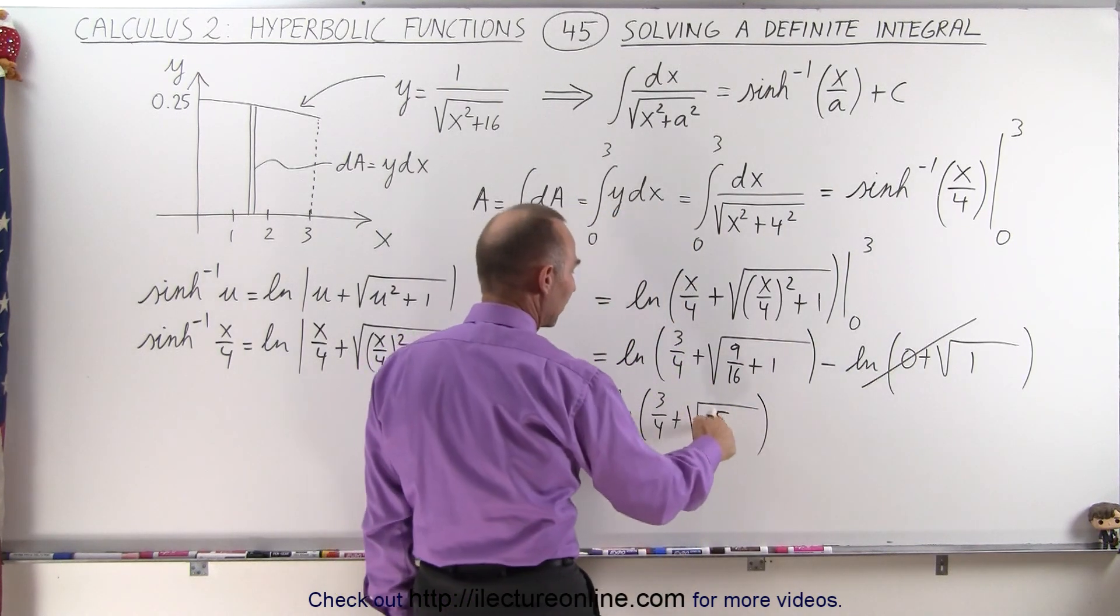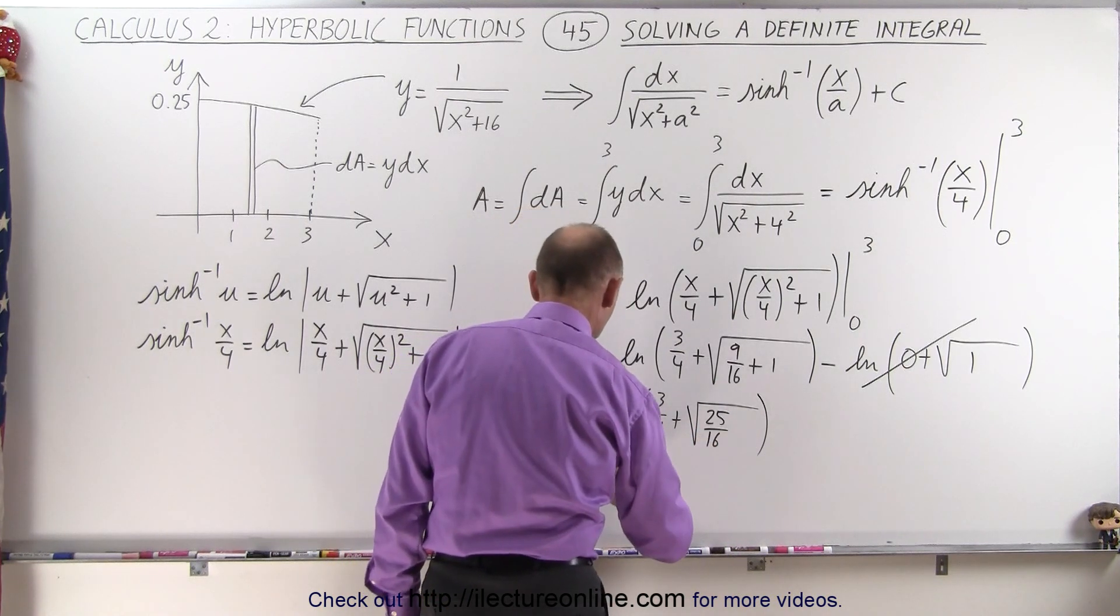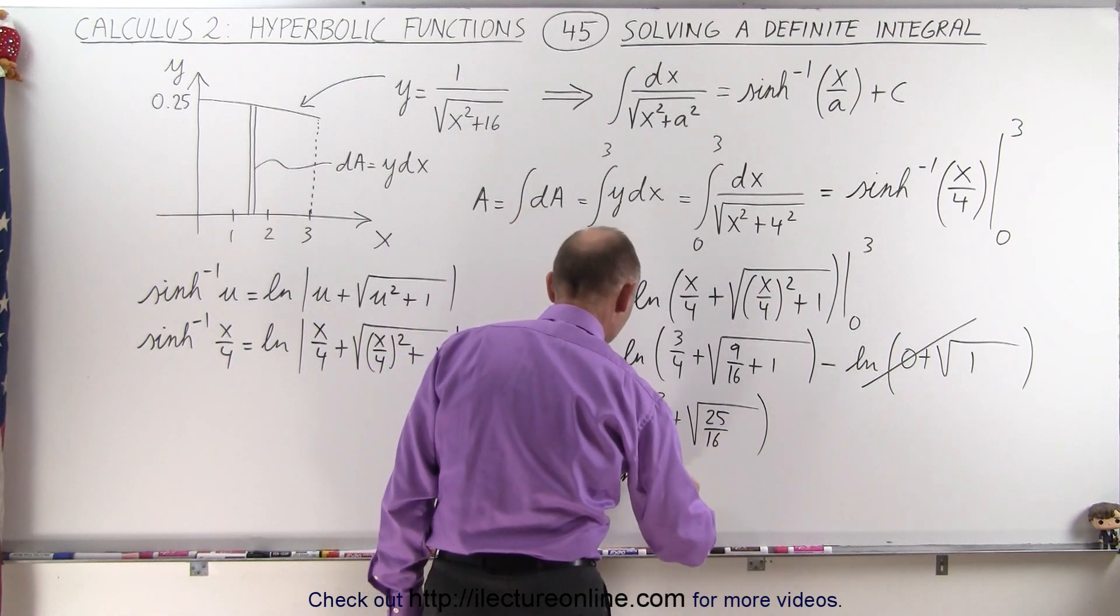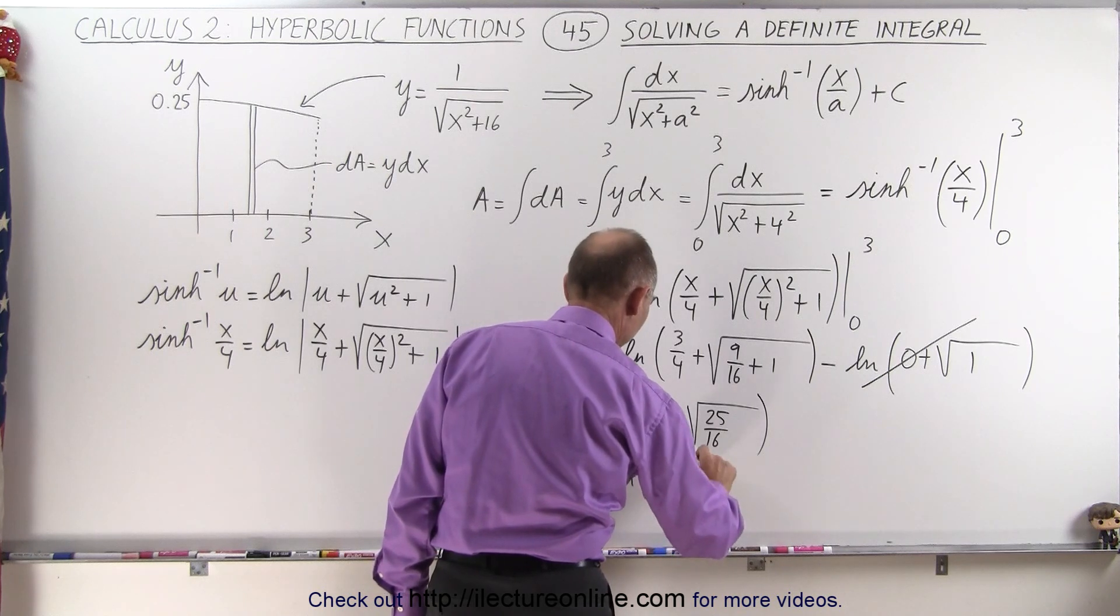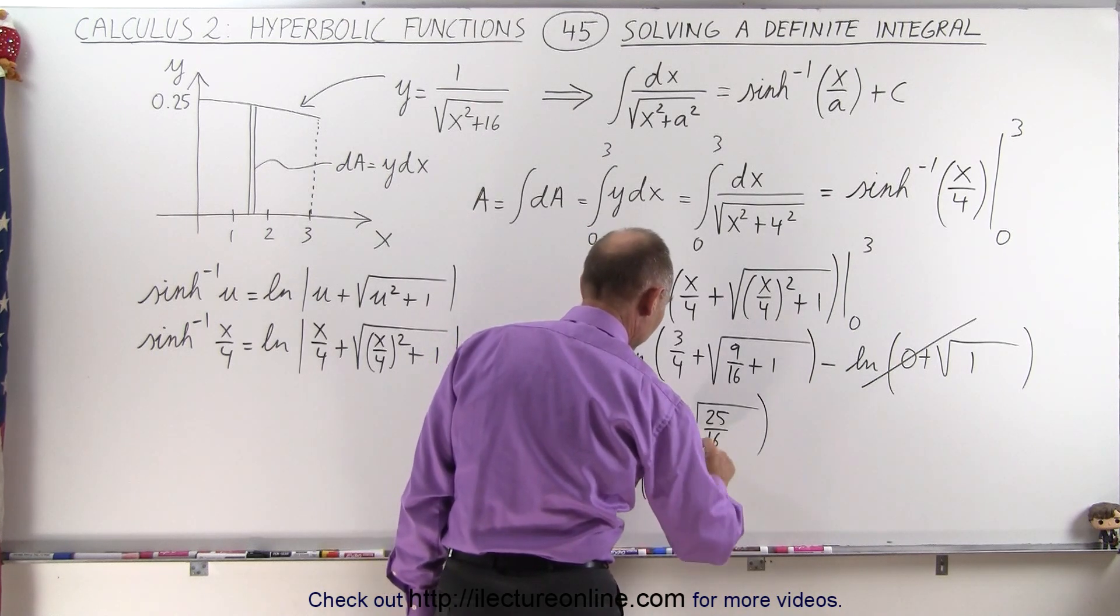So the square root of this, that would be 5 fourths, so we get this is equal to the natural log of 3 over 4 plus 5 over 4, which is 8 over 4.